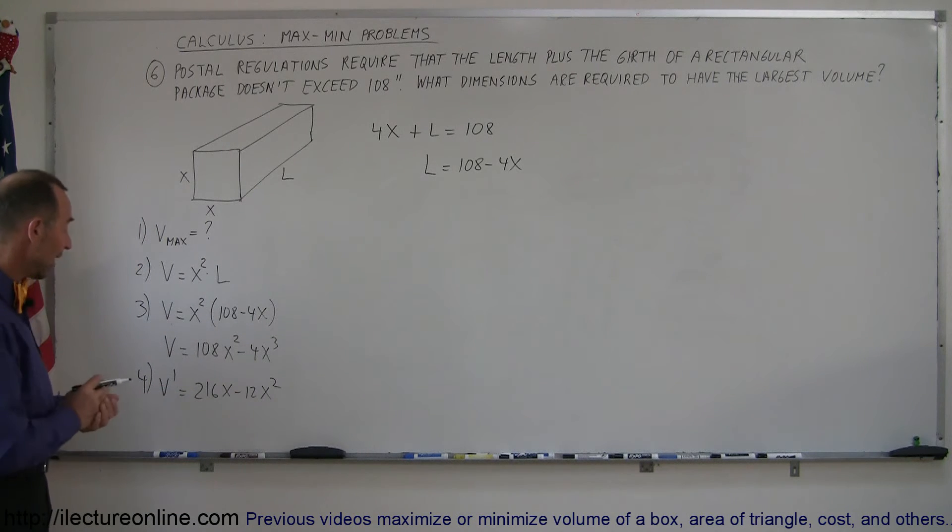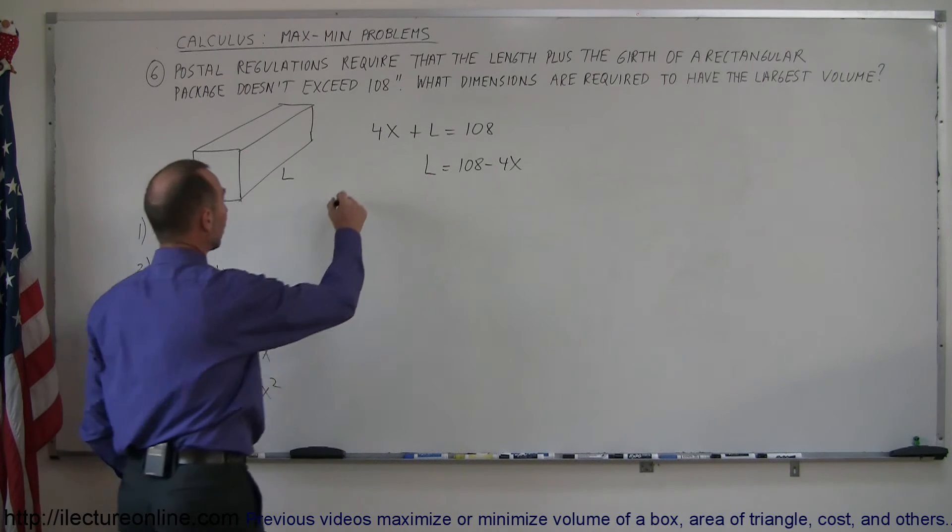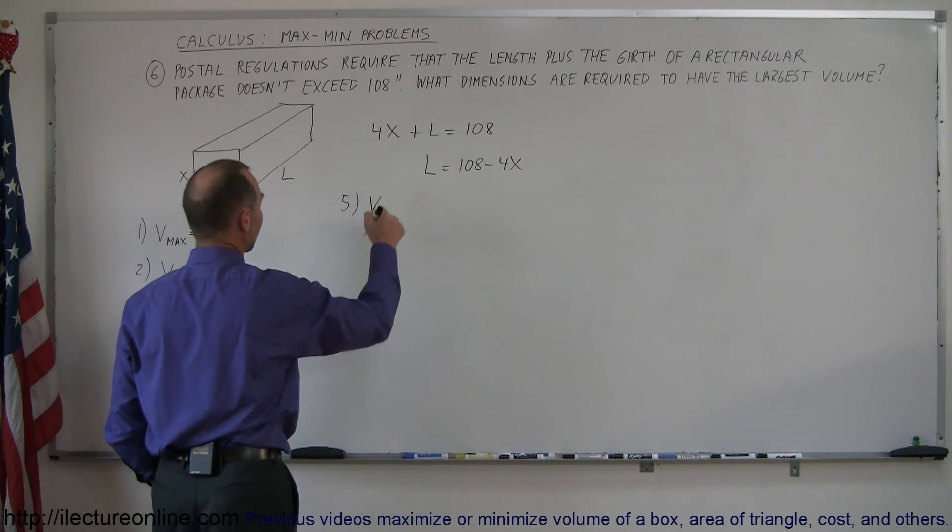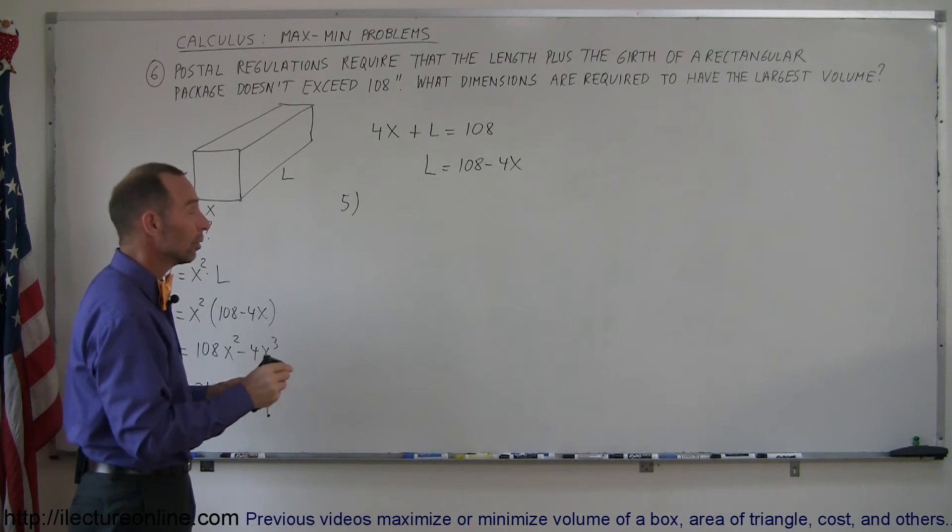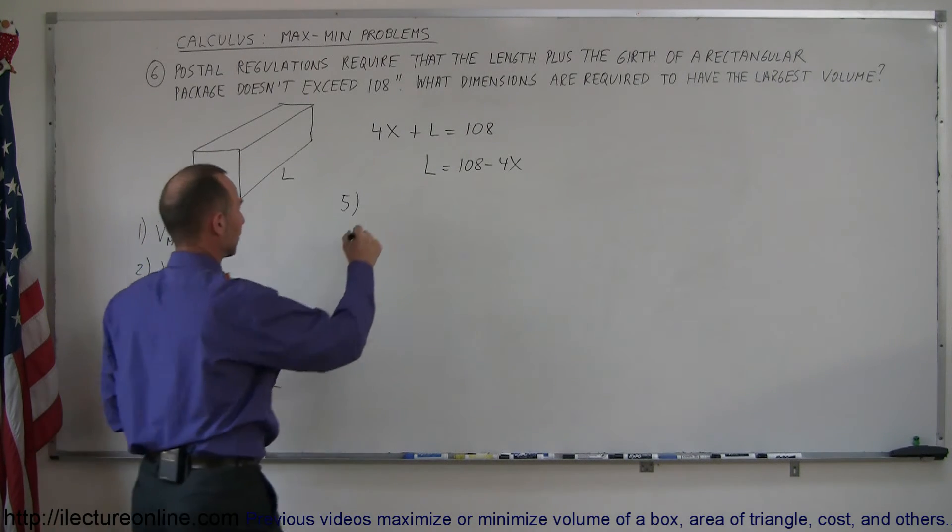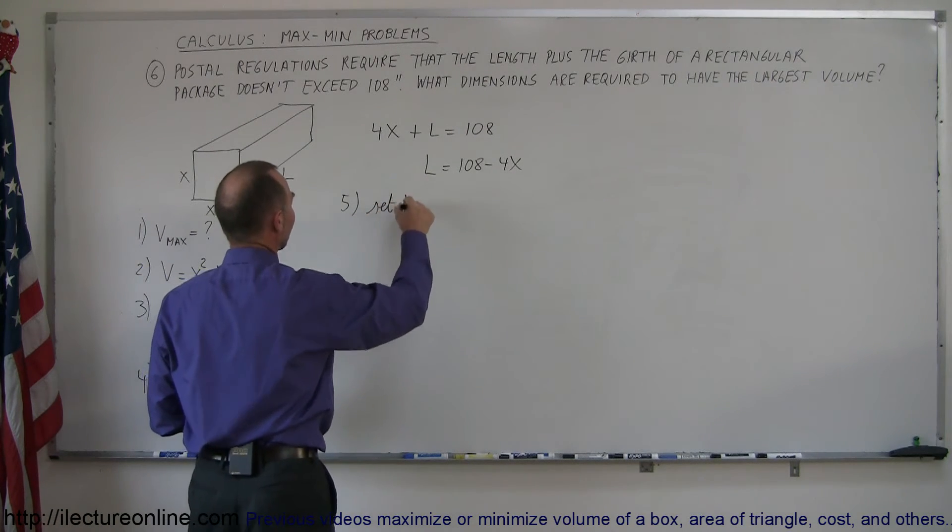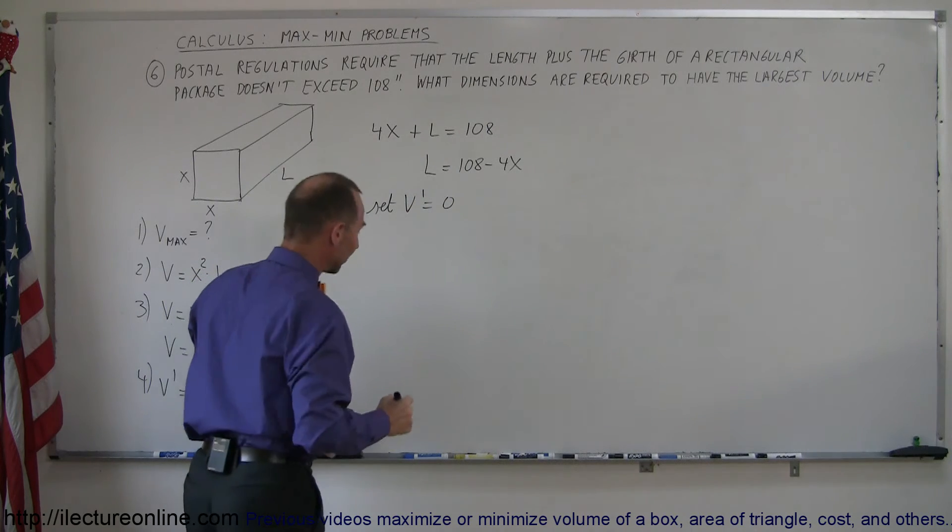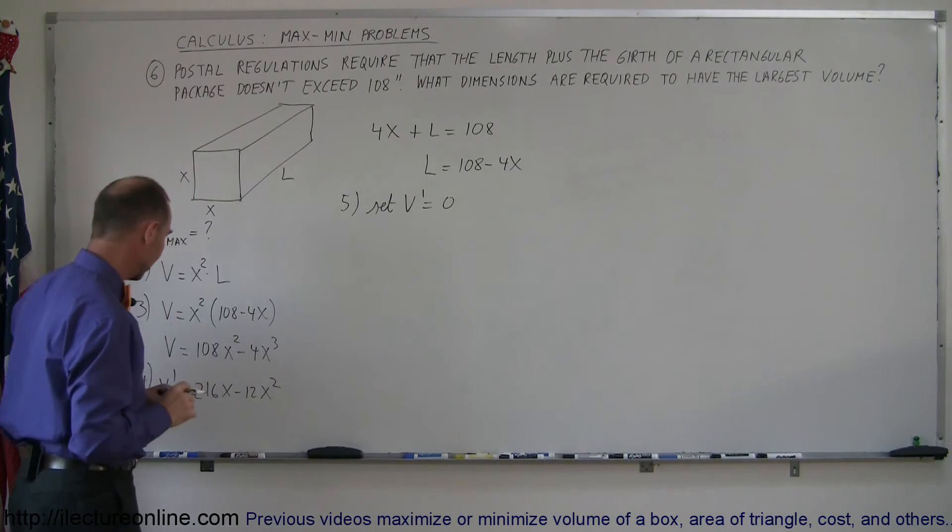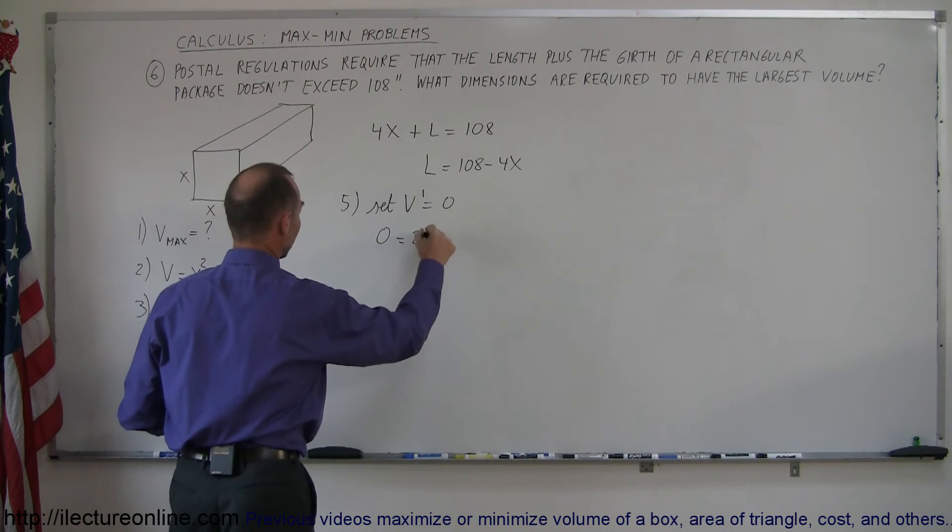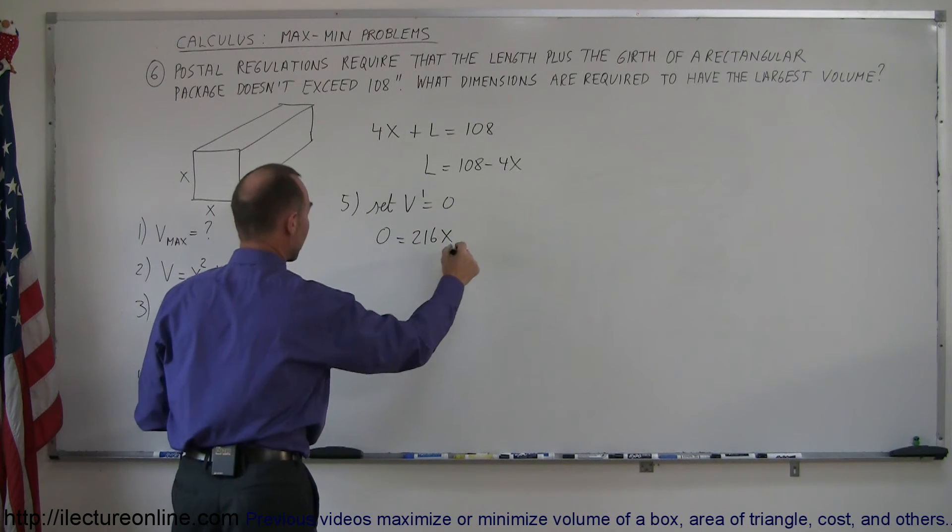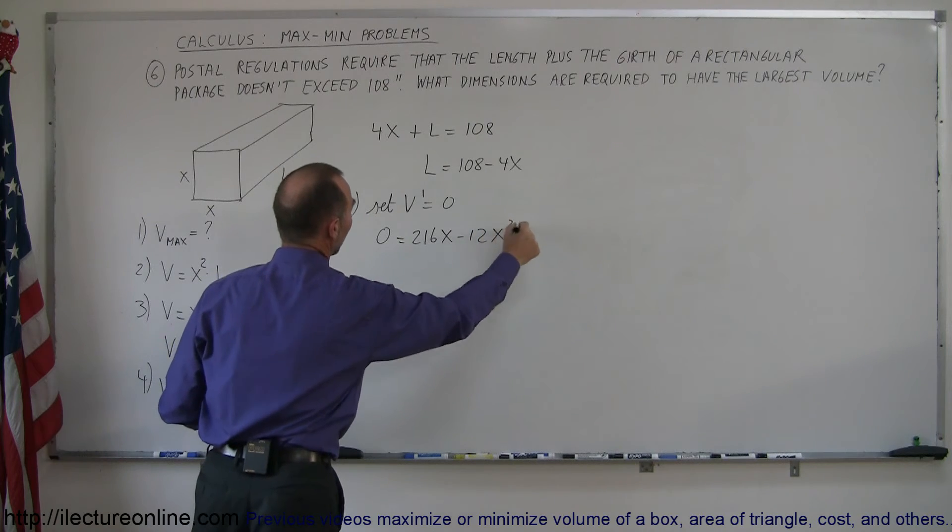And now we're ready to do step five which is set that equation equal to zero, set the derivative equal to zero. I like to use the word set because it isn't equal, we're going to set it equal for a specific purpose. So we set V prime equal to zero so we can find the max or the min of that variable. So zero is equal to 216x minus 12x squared.